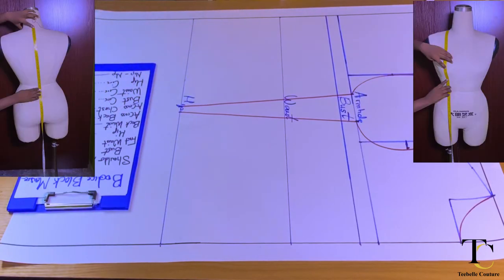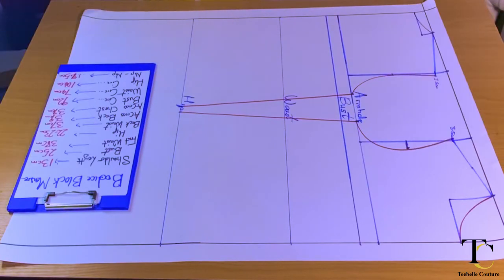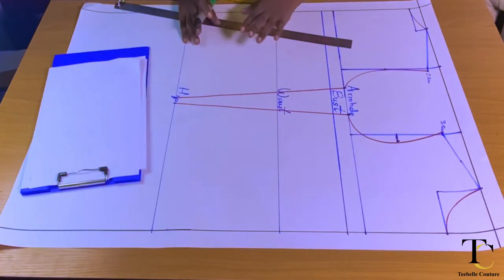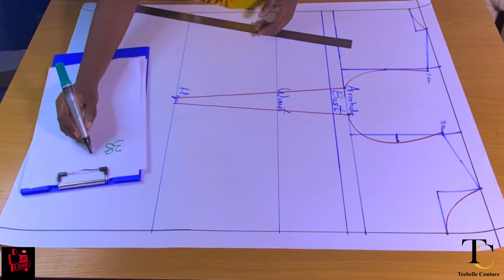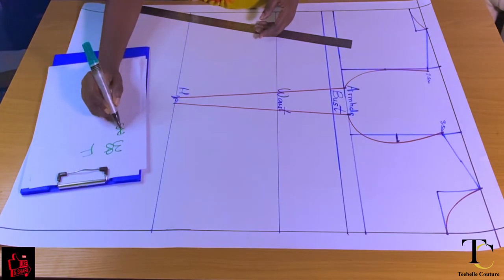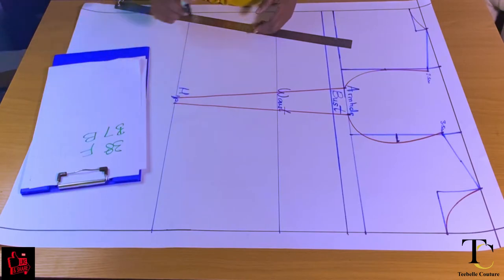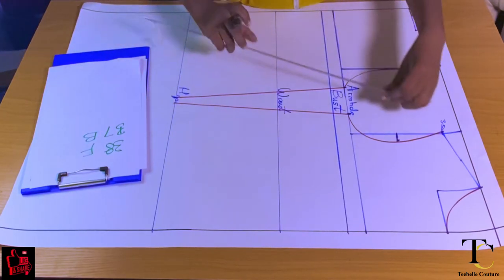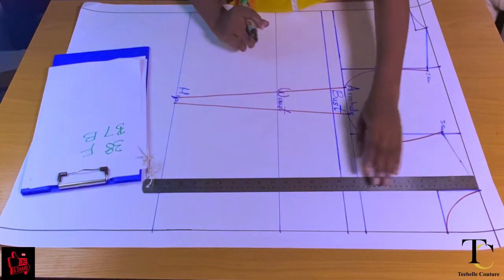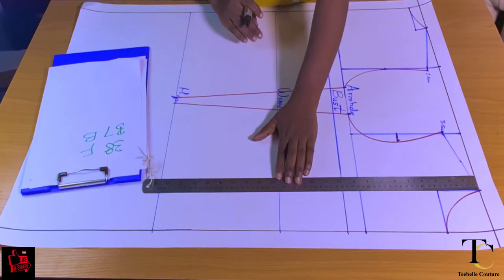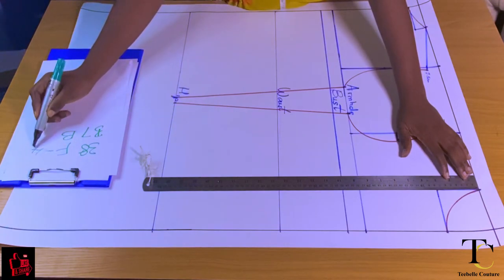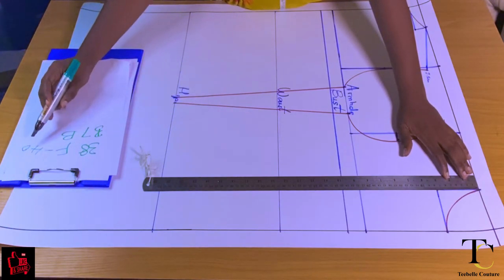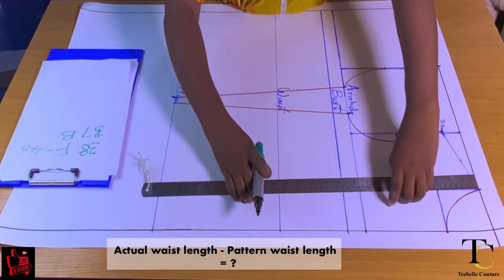When I was taking the body measurements, I took my front waist length and my back waist length — these are different because the front waist length is usually longer than the back waist length. My front waist length is 38 centimeters while my back waist length is 37 centimeters. When you measure your front waist length on the pattern, you'll discover that what you have is actually your back waist length because you drew from your back pattern to your front pattern.